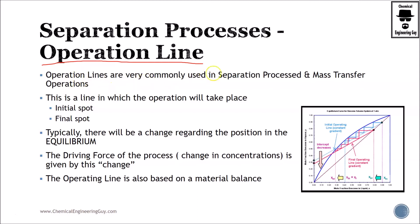Operation lines are very commonly used in separation processes and mass transfer. This is literally a line in which we are going to be operating our process. This will typically take place in an initial spot that will be the status quo or the initial point and the final spot which will be here.